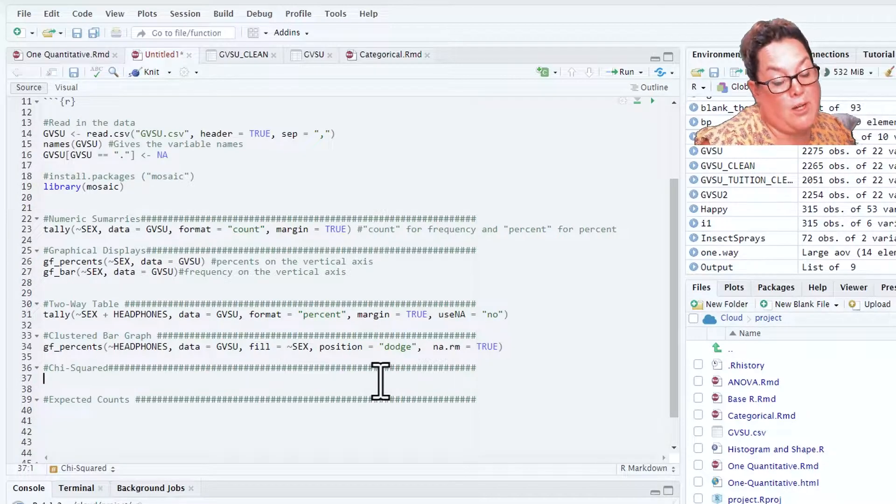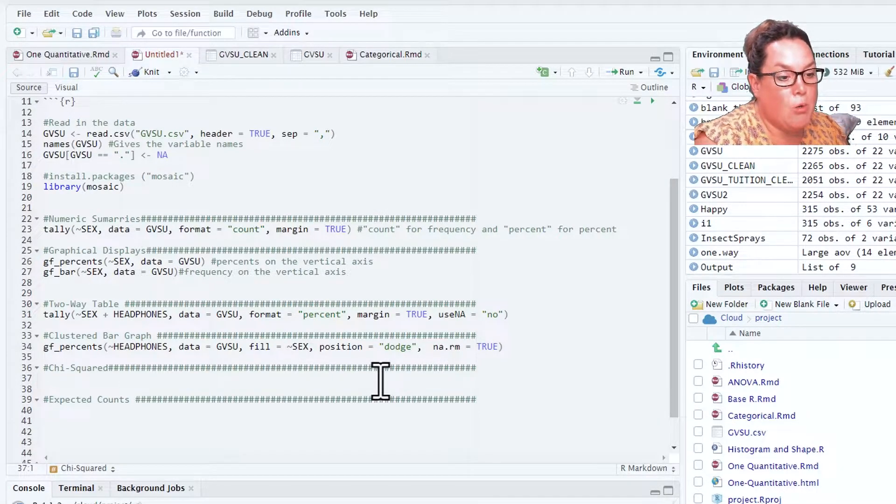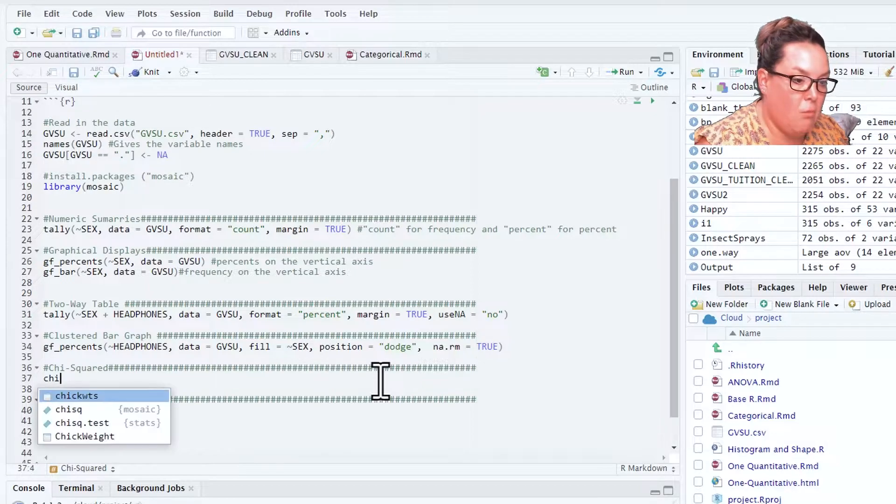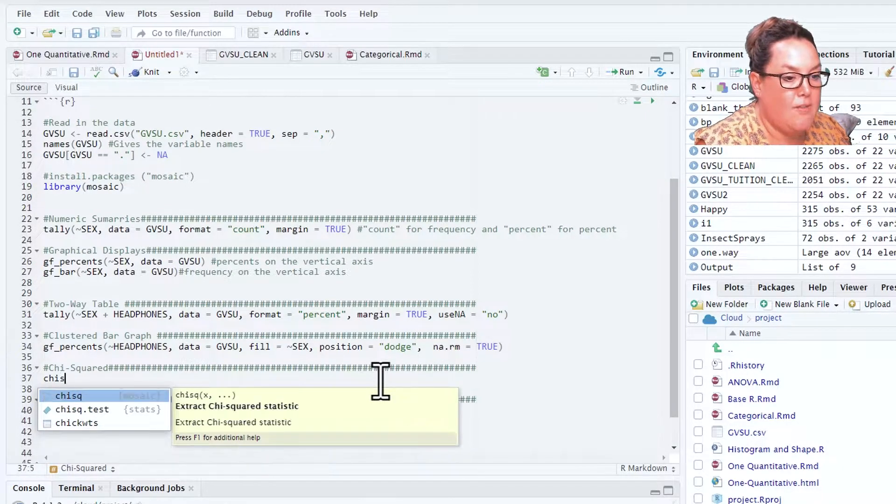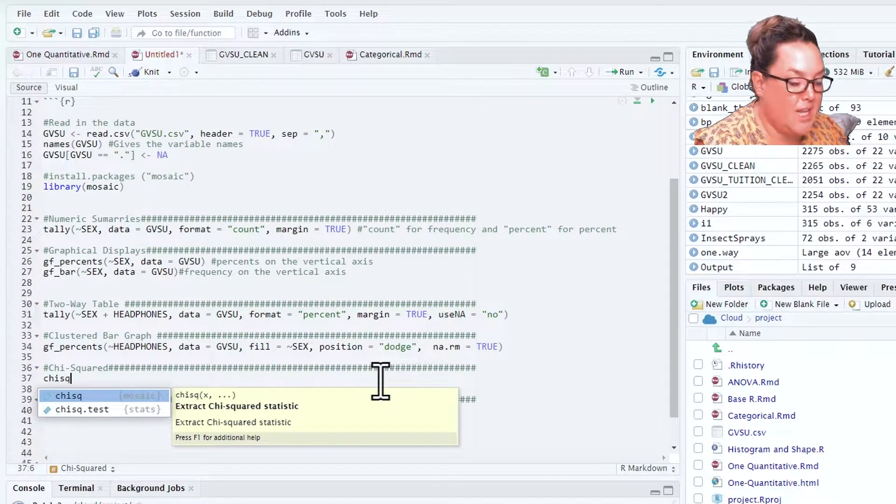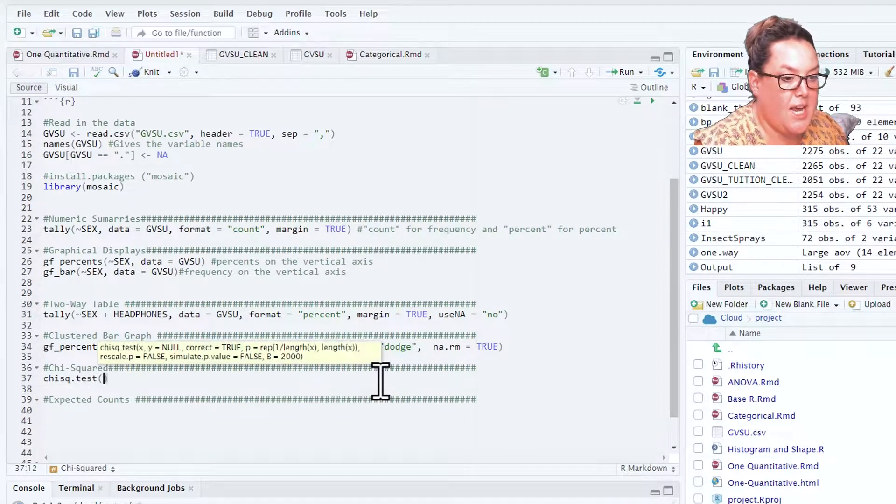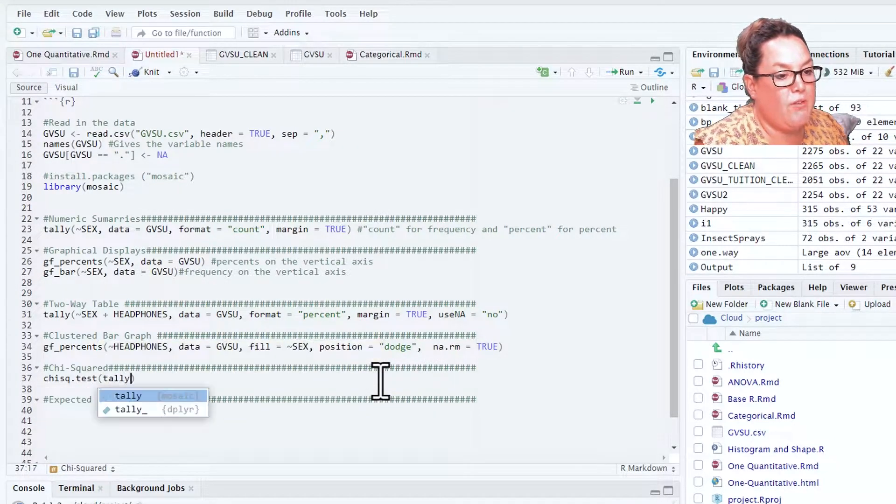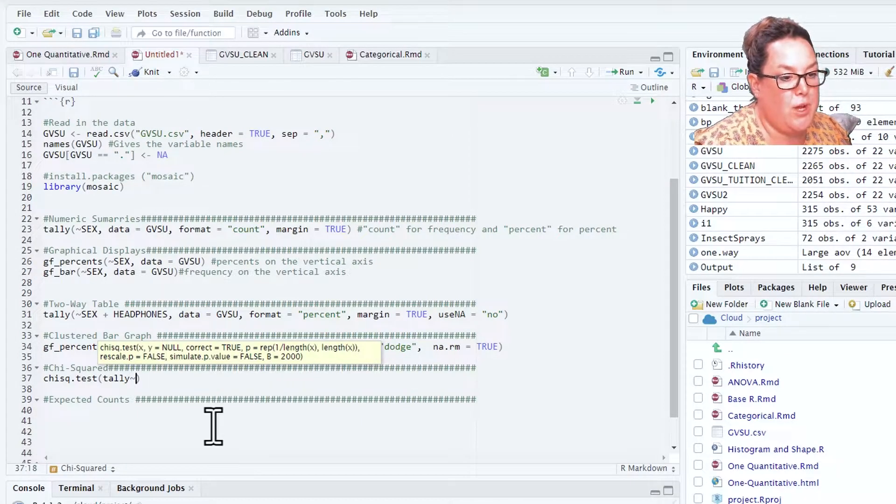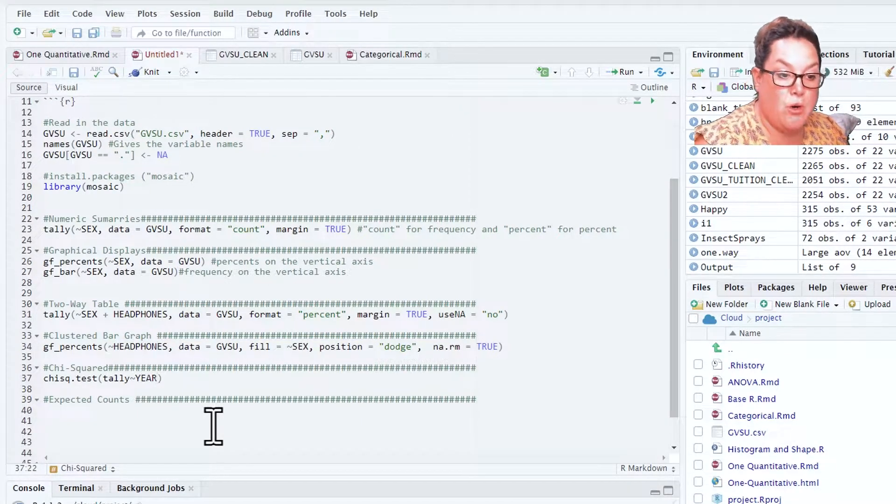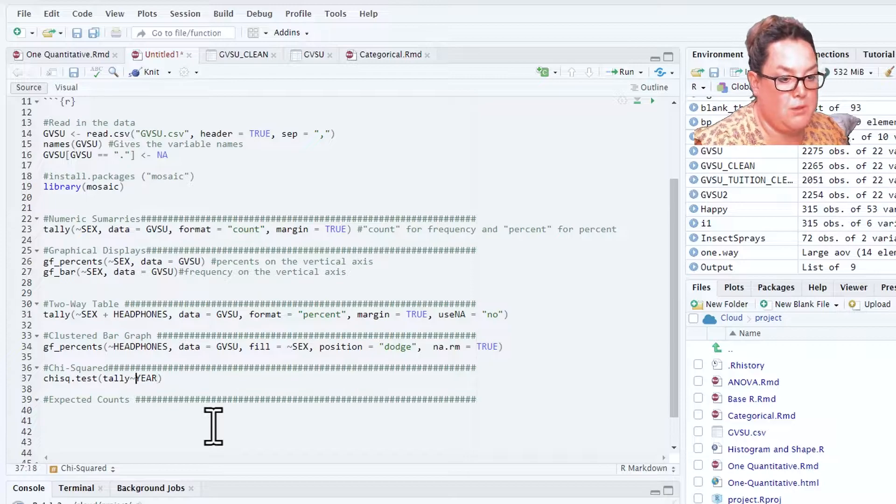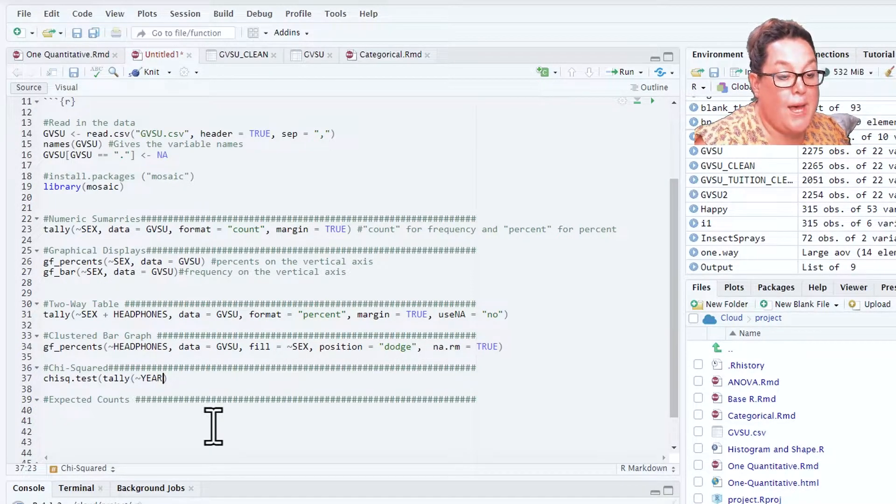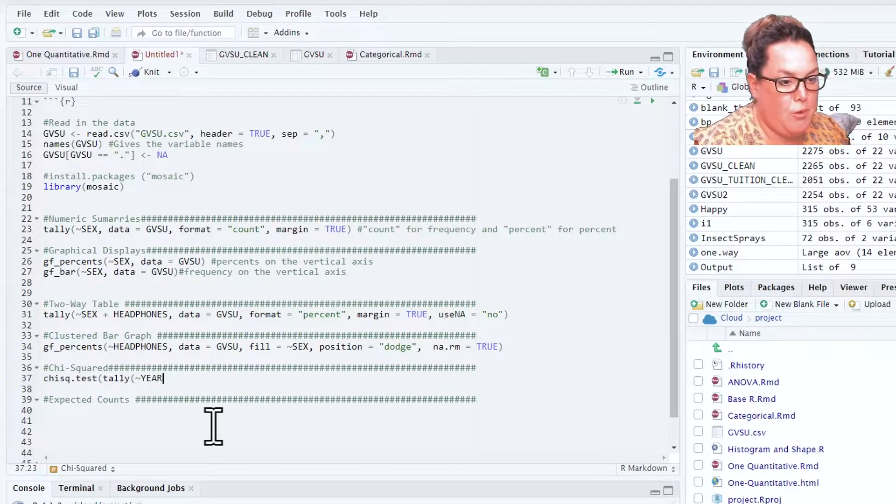Now I'm going to write code to do the chi-squared. You'll notice here I have chisq.test and I am going to follow almost the same format that we had for the two-way table. My explanatory variable comes in first, so that would be the year in school and I expect that to affect whether or not someone is superstitious.